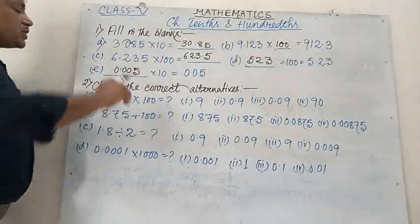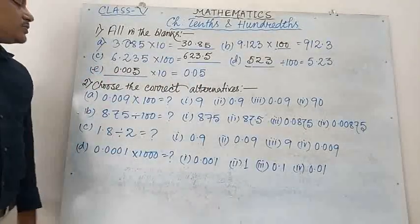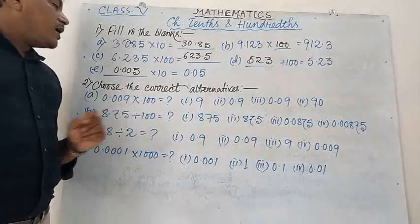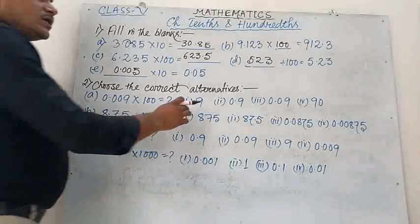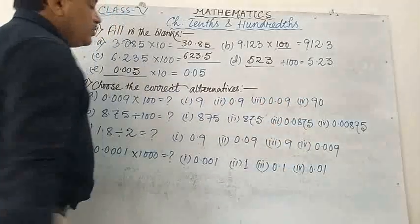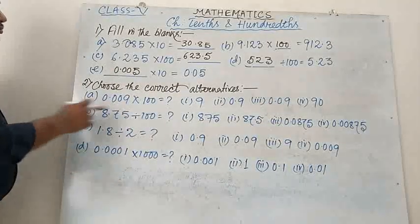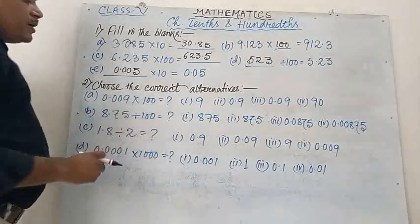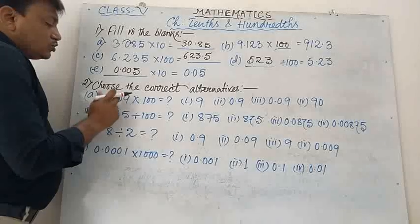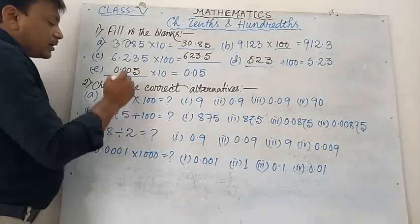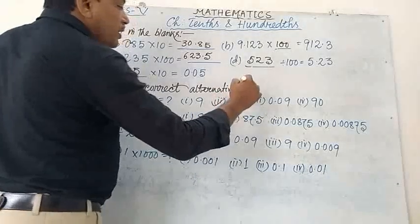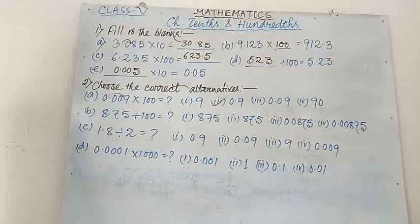Now Number 2, choose the correct alternatives. Number A: 0.009 multiplied by 100 equals to what? Options are: 9, 0.9, 0.09, 90. As we know, multiplied by 100 means the point will shift 2 digits to the right — 1 digit, 2 digits. So the answer will be 0.9, which is the correct answer, option 2.